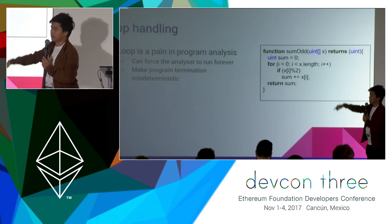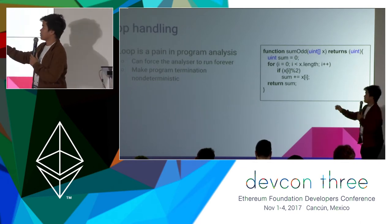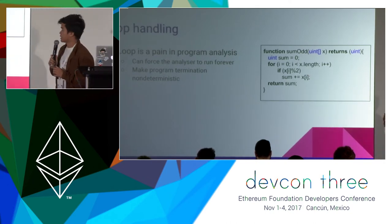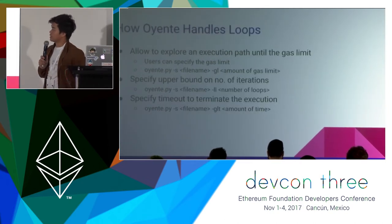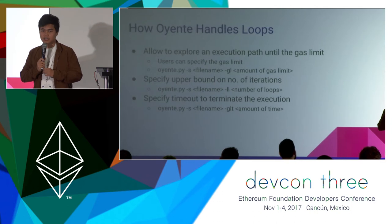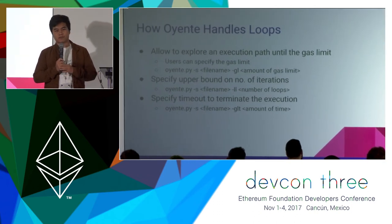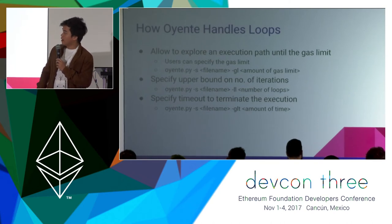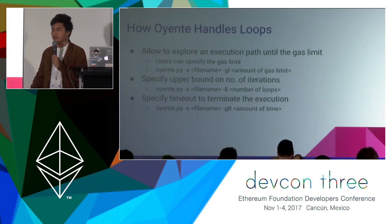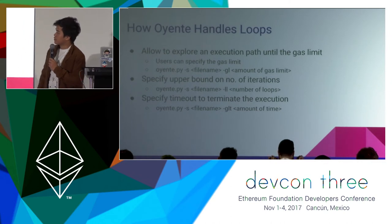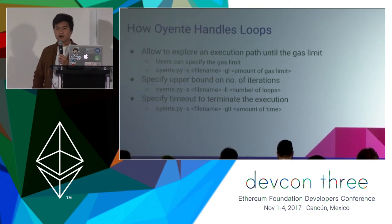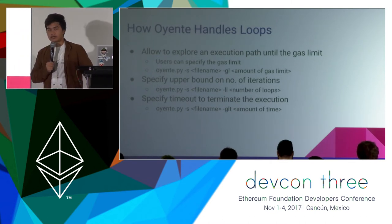This simple function can make Oriente run forever because we have no idea what the length of the array X is. In Oriente, we handle loops in different ways. First, we allow the user to specify the gas limit, so Oriente keeps exploring the program until the gas limit is reached. We also allow the user to specify the number of iterations they want the loop to run. Here are the arguments you can use. The user can also specify a timeout that they allow Oriente to run — after that timeout, Oriente will just stop.